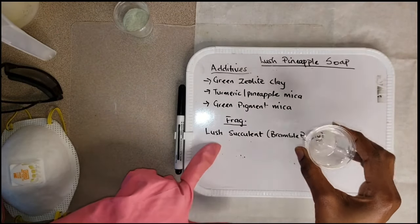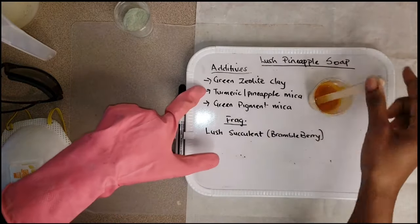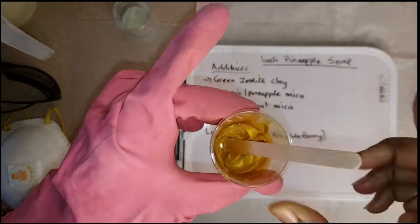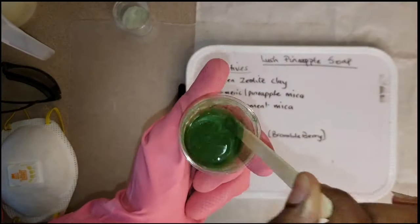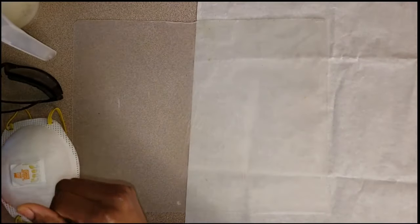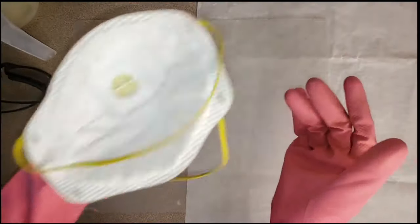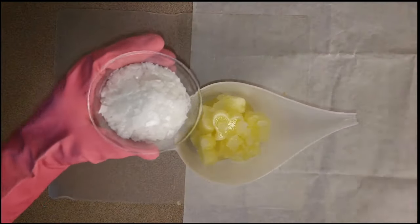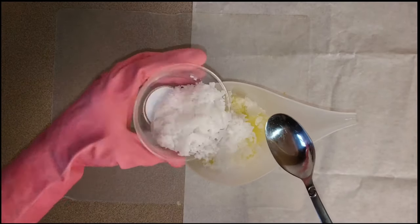I'm using turmeric, mica, lush succulent fragrance from Bramble Berry, and a green pigment mica for color. Make sure to suit up for safety and let's begin.